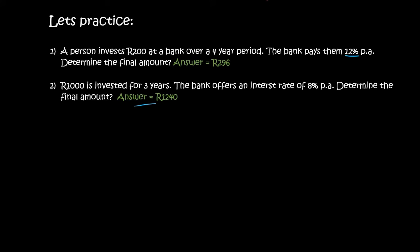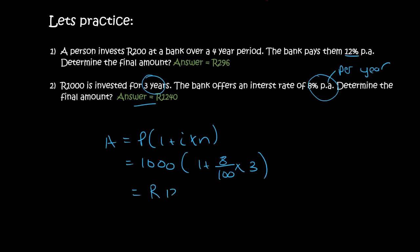Number two, a thousand Rand is invested for three years. The bank offers an interest rate of 8% PA. Remember, PA is per year. Determine the final amount. So, back to our formula, where we're starting off with a thousand Rand. The interest rate is eight percent. So, I'm just going to go eight over a hundred. And the number of years is three. Type that all in, and you get a thousand two hundred and forty.